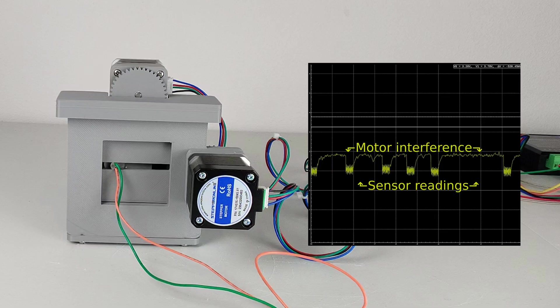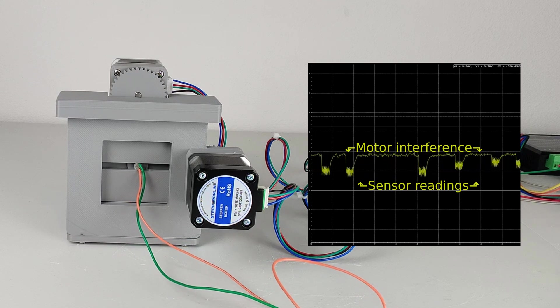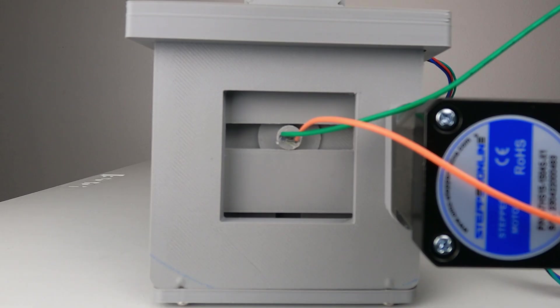But luckily, this is an easy fix. The motor controllers have an enable pin, so we can turn them off, take a pixel, and then turn them back on when we need to move. But this makes a new problem. If you look closely, you'll see that every time the motor turns back on, it jumps a little.